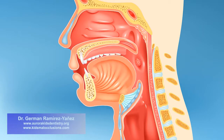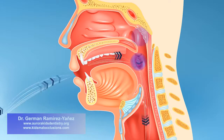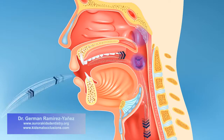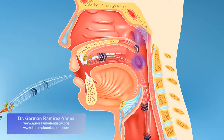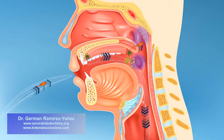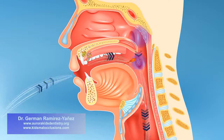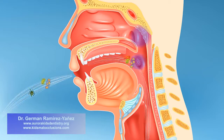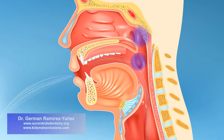Mouth breathing allows the air to pass directly into your throat, where the adenoids and tonsils are located. In that way, the air entering into your body through your mouth has not previously been purified, and the lymphoid tissue in the adenoids and tonsils becomes the first defensive barrier against the harmful particles contained in the air.